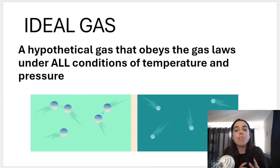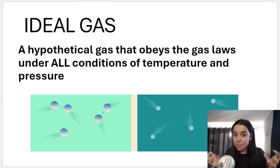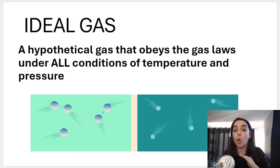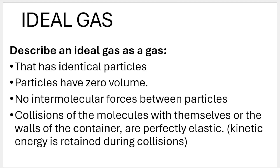Think of an ideal gas as a hypothetical gas that obeys all the gas laws under all conditions of temperature and pressure. When scientists refer to an ideal gas, they refer to a gas that has identical particles — every single particle is the same as another. We know that's not necessarily true for real gases, where particles often have their own speed or kinetic energy.